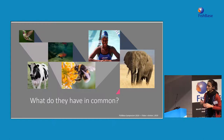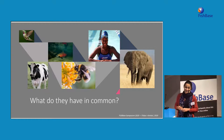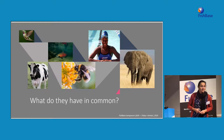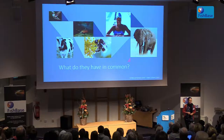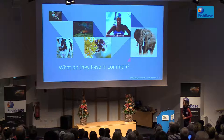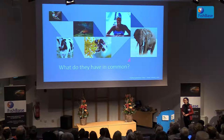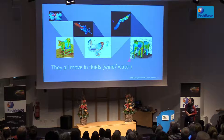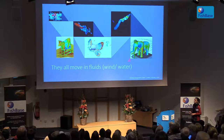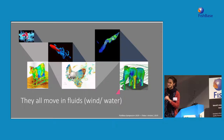I start my presentation by challenging you a little bit — what do these animals have in common? What does a cow have in common with a bumblebee, an elephant, or even with us? What they all have in common is the fact that they all move in fluids — either wind or water. Usually we think about fluids as water, but don't forget that wind is also a fluid.